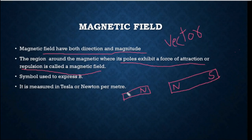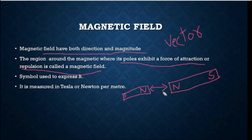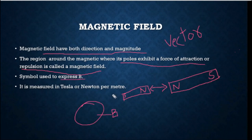When there are same poles facing each other, it will be repulsion. If you look at the poles of the magnetic field and they are the same, it will be repulsion. Basically, magnetic poles — if the poles are the same, there will be repulsion; if they are different, there will be attraction. The symbol used to express a magnetic field is B.